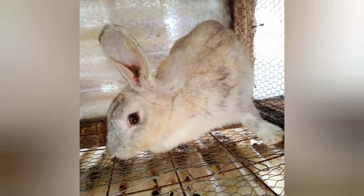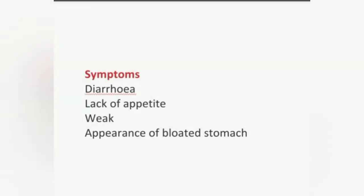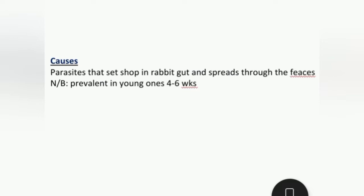The second disease is known as coccidiosis. The symptoms are diarrhea, lack of appetite, becoming weak, and appearance of a bloated stomach that looks like a balloon. The cause is parasites that set up shop in the rabbit's gut and spread through the faeces produced by the rabbit. These are mostly prevalent in baby kits four to six weeks old.